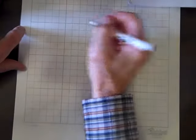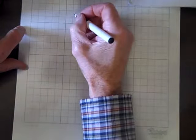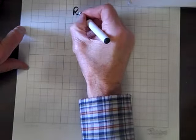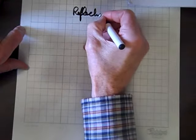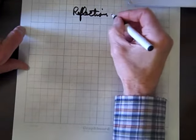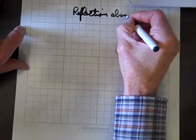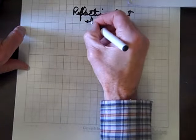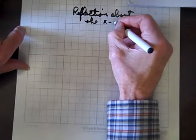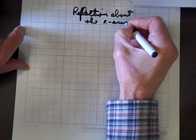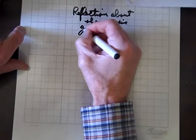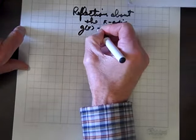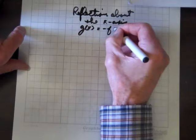Well, let's discuss another type of transformation, and that's a reflection about the x-axis, and it has the form g of x equals negative f of x.